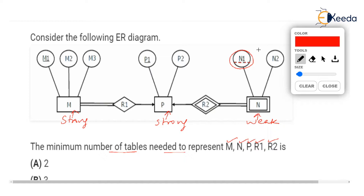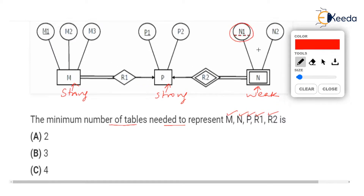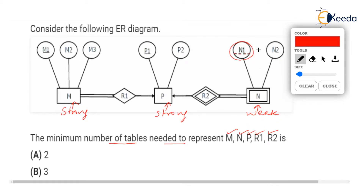Just a warning to anyone who has not seen the earlier videos: this is a GATE question we are solving, and students must have watched all the previous videos. The options given for how many tables will be created are 2, 3, 4, and 5. You can pause the video and answer this question before I solve it.